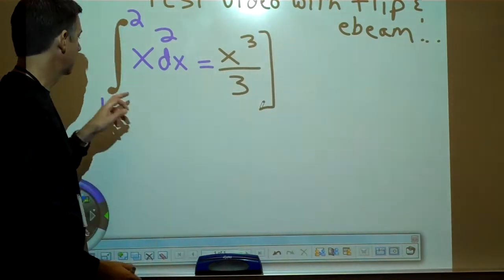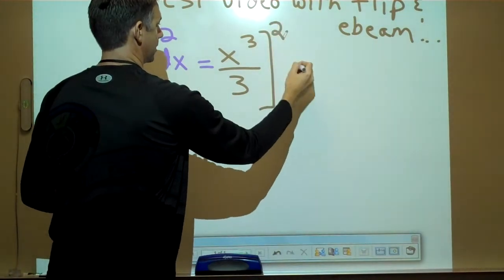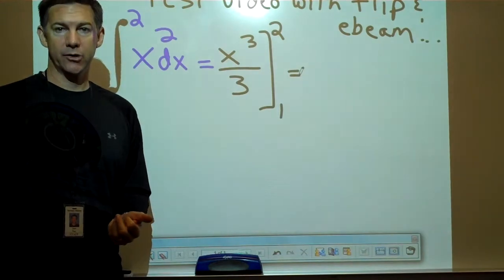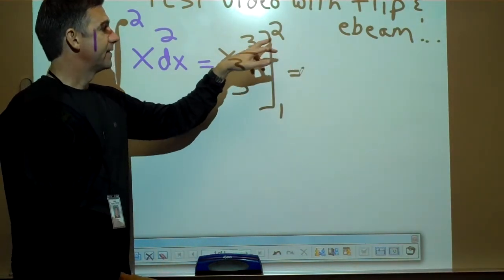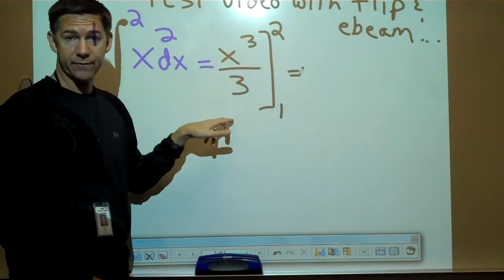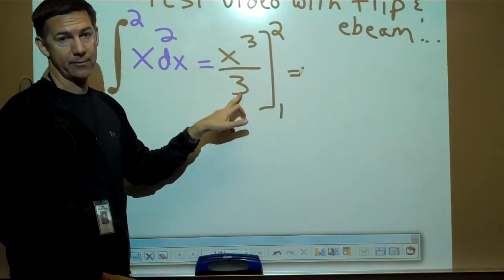And we have to evaluate it from 1 to 2. Now to evaluate integrals, what you do is you find the antiderivative. And then now we're just going to plug the 2 in first, and then we'll have a minus sign and then we'll plug in the bottom number.